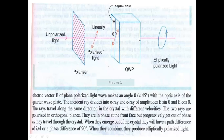When the E-ray and O-ray emerge out of the quarter wave plate, they have a phase difference of 90 degrees or a path difference of λ/4. These two components combine to form elliptically polarized light. So when they recombine on emerging out of the crystal with a path difference of λ/4 and a phase difference of 90 degrees, they produce elliptically polarized light.